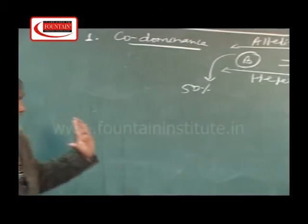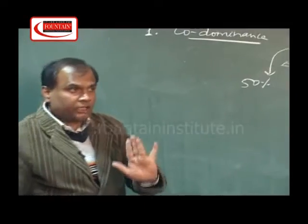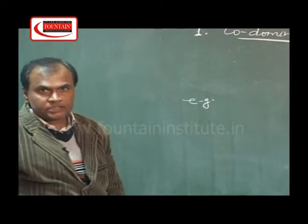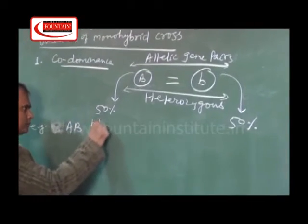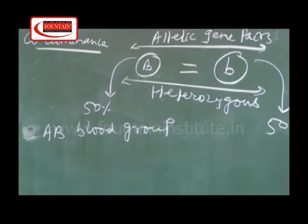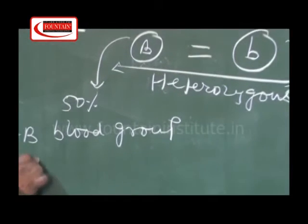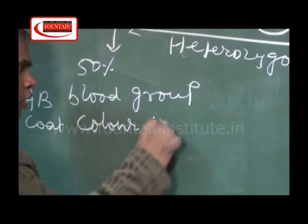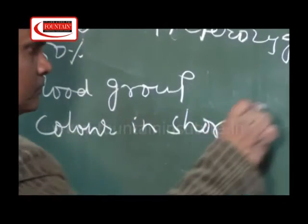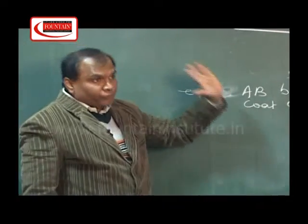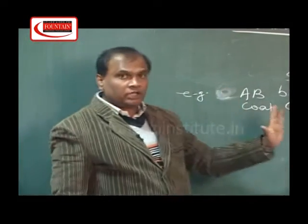Here, both alleles get expressed in the F1 generation. A typical example of this type of inheritance is the inheritance of the AB blood group, or another example is the inheritance of coat color in shorthorn cattle.